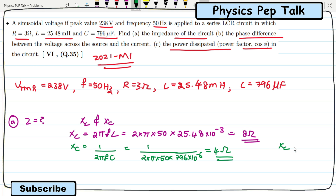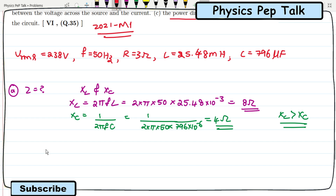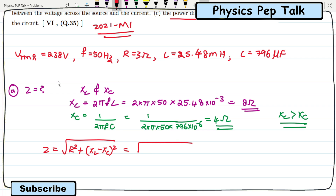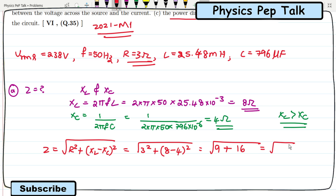Since XL is greater than XC, the voltage leads the current. Z is equal to root of R square plus XL minus XC the whole square. So root of 3 square plus 8 minus 4 squared, which is root of 9 plus 16, that is root of 25, giving Z equal to 5 ohms. The impedance value is 5 ohms.